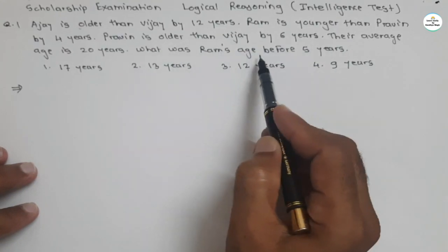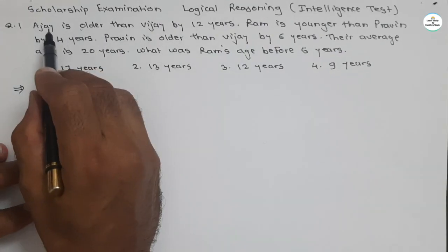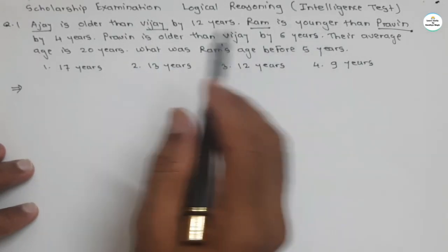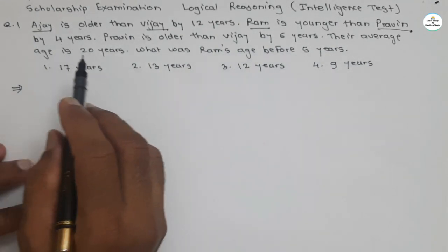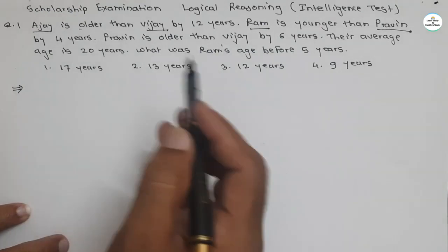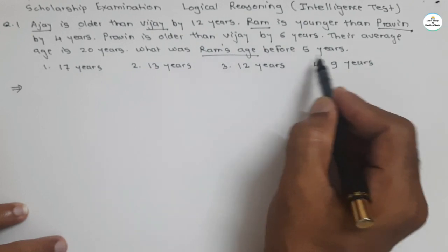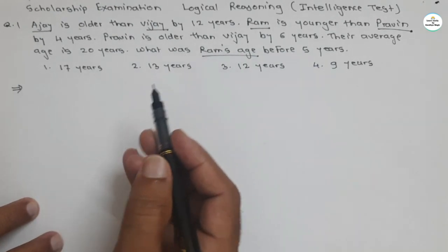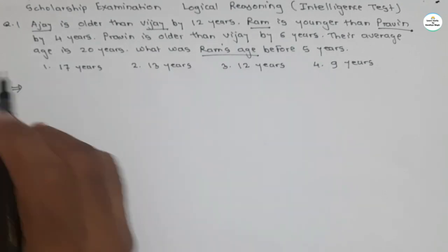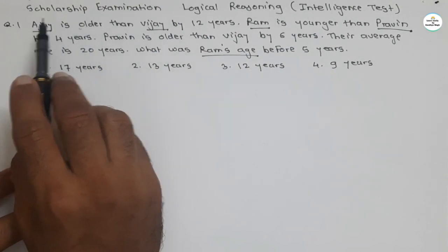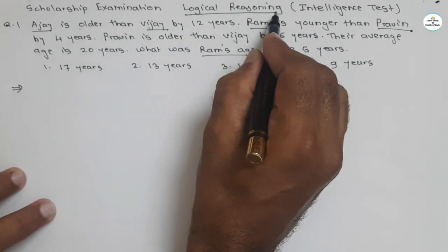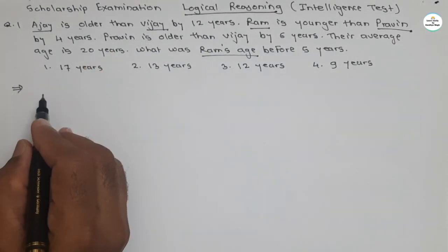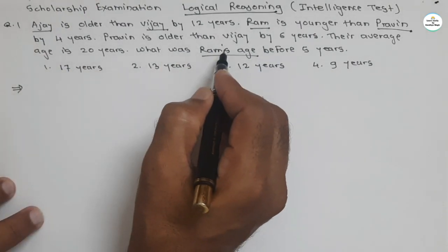Their average age is 20 years. What was Ram's age before 5 years? Here we have four boys: Ajay, Vijay, Ram, and Praveen. Ages are not directly given — a relation is given and we have to find Ram's age 5 years ago. To solve such types of questions, we have to think out of the box and our calculation must be very fast. This question is under scholarship examination logical reasoning, digital test section.